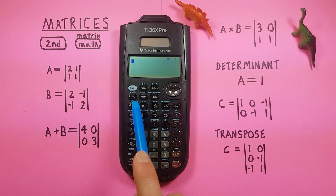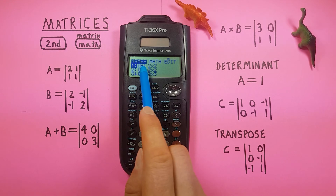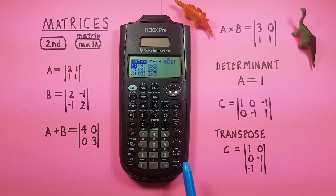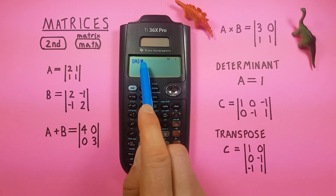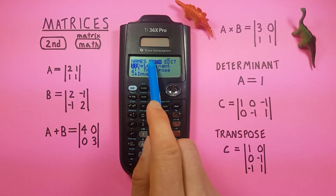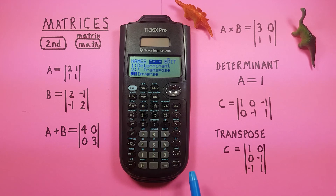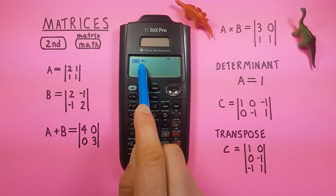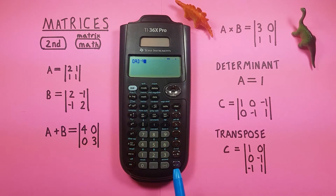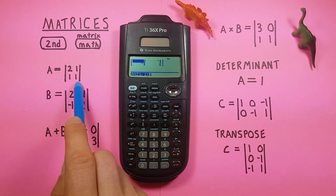We can also find the inverse of a matrix. Highlight A and place it on screen. Go back to the matrix menu, go to the math option, and scroll down to inverse. Highlight it and press enter — you'll see a negative one exponent after the A indicating it's the inverse. Press enter and we see the inverse of matrix A.